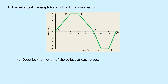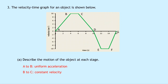Question 3 is very similar to question 2, but this time we have motion below the x-axis on the velocity time graph. The object goes from A to B, B to C, C to D, D to E, E to F, and F to G. Part A says describe the motion at each stage. From A to B we have a uniform acceleration. From B to C we have a constant velocity. From C to D we have a uniform deceleration because of that negatively sloping line.